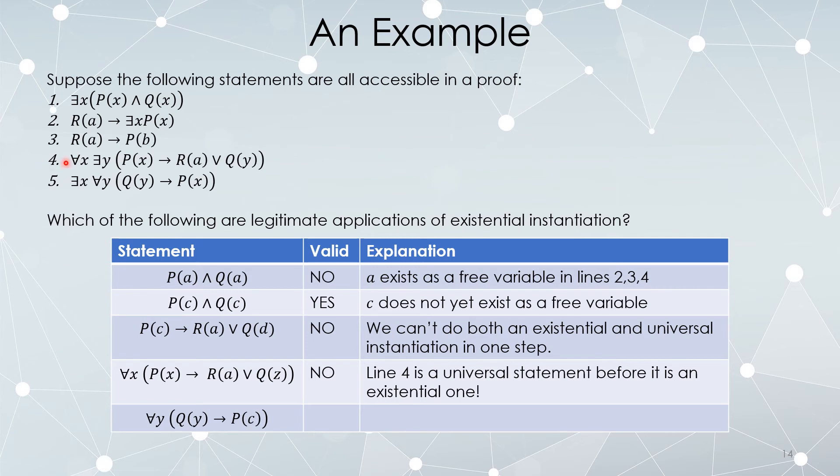So you can't use existential instantiation on line four. But what about line five?